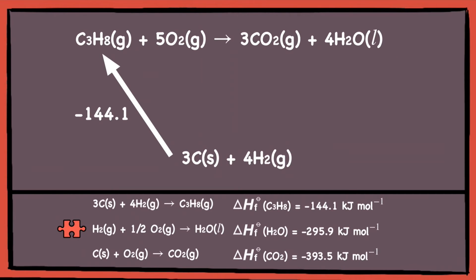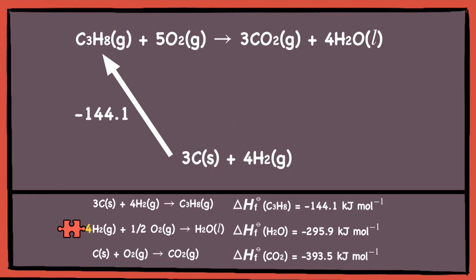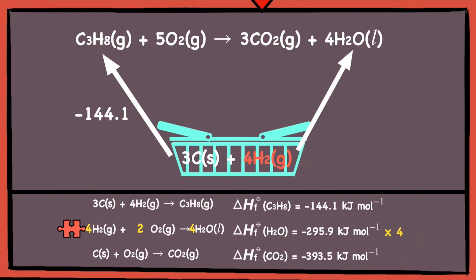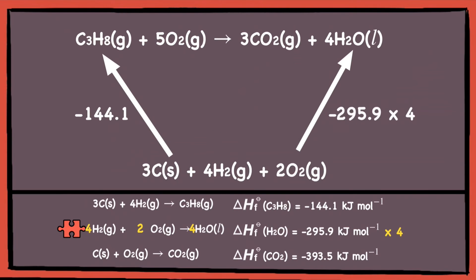Next, let's use the second equation. The substance of interest here is water, and since the main equation has four moles of water, we need to multiply four to every substance in the second equation, not forgetting to multiply the enthalpy change by four too. So four moles of hydrogen gas reacts with two moles of oxygen to form four moles of water. We draw an arrow up to represent the equation. The basket already has four moles of hydrogen gas, so we can use it to satisfy the second equation with no need to add more hydrogen. But the basket does not have any oxygen, so we add two moles of oxygen into the basket, then write in the enthalpy change.